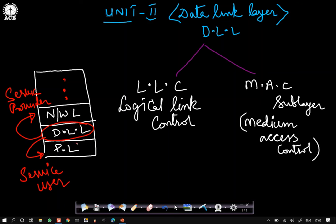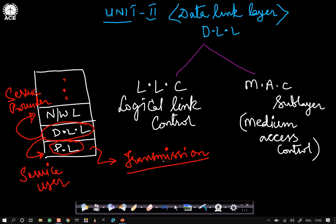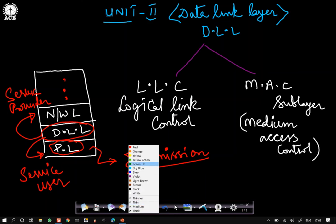In our earlier video we have already seen the issues of the physical layer — it deals with the transmission of bits. At the physical layer we transmit data in the form of bits over a communication channel, deciding about voltages, modulation techniques, encoding techniques, and management of media. Taking that bit transmission as a service, the data link layer in the form of LLC and MAC carries out different functions that we are going to learn in this chapter.